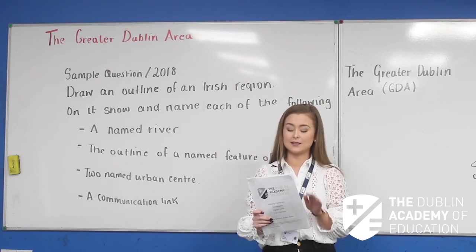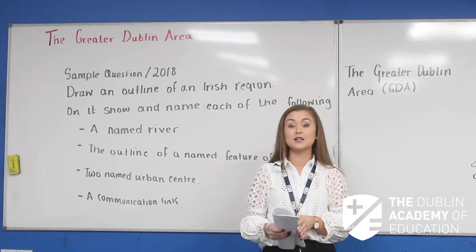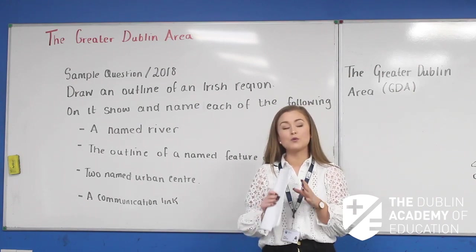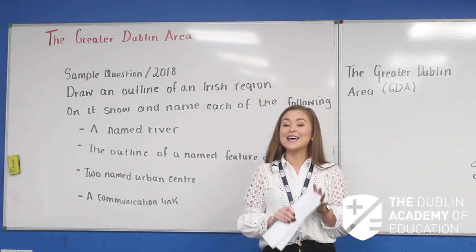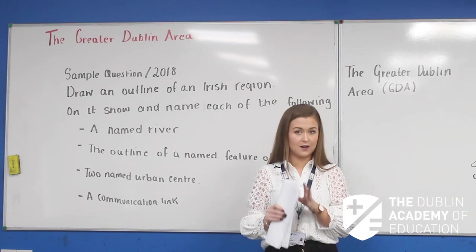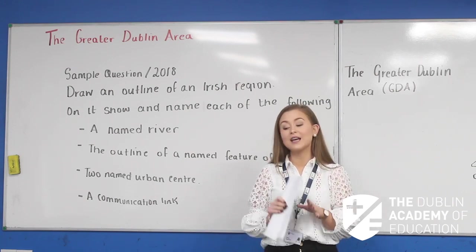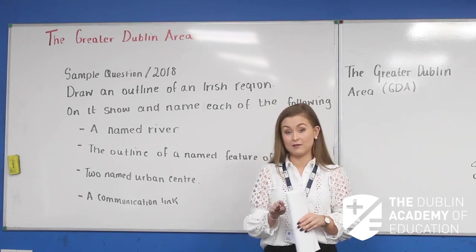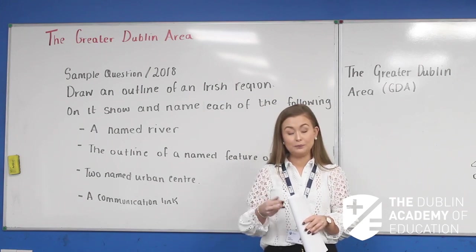We're going to start with the GDA, the Greater Dublin Area, because a lot of you have looked at this prior to this but we really want to get in depth with it. The Greater Dublin Area is also referred to as the GDA. Remember to start our essays with Greater Dublin Area, then GDA after that. It's an area around Dublin which includes four counties: Dublin County itself, Kildare, Meath, and Wicklow.